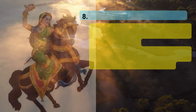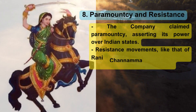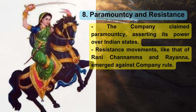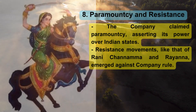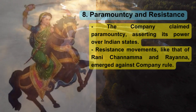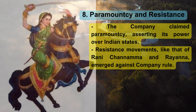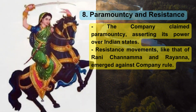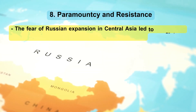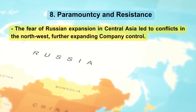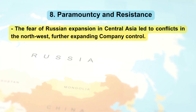Including Avadh and Punjab. Paramountcy and Resistance: the company claimed paramountcy, asserting its power over Indian states. Resistance movements, like that of Rani Channamma and Rayanna, emerged against company rule. The fear of Russian expansion in Central Asia led to conflicts in the North-West, further expanding company control.